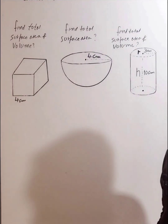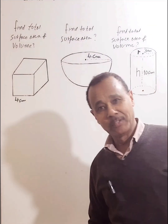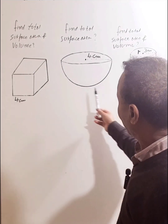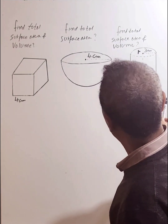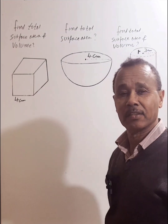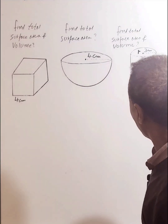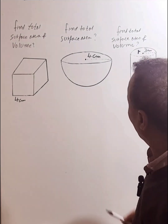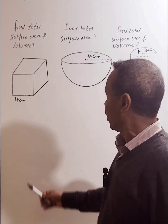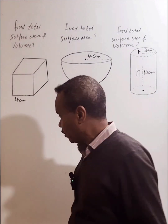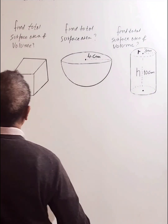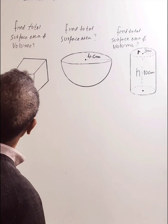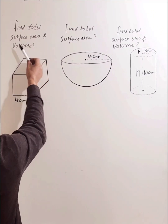Hello everyone, welcome to today's video. Today's lesson is finding the total surface area of three different 3D shapes: a cylinder, a hemisphere (half of a sphere), and a cube. Let's start by finding the total surface area and volume of each.